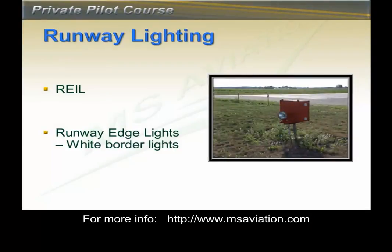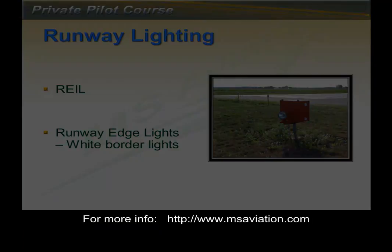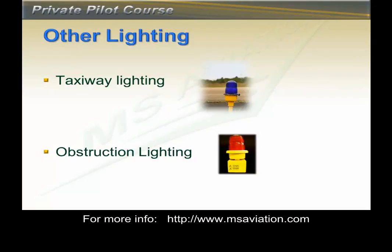On the runway itself we sometimes see REIL lights installed — REIL stands for Runway End Identifier Lights. They are usually installed at airports where the runway is hard to see due to other ground lights. Runways also have steady white lights placed at regular intervals along both sides from beginning to end, known as runway edge lights. Taxiway lights are blue and border the taxiways. Obstruction lighting is red.